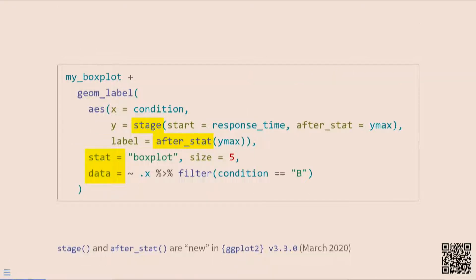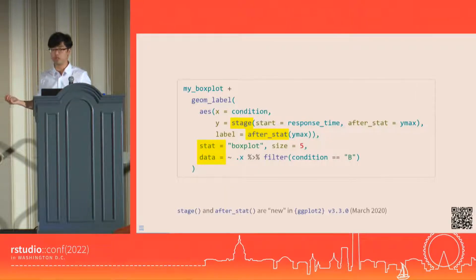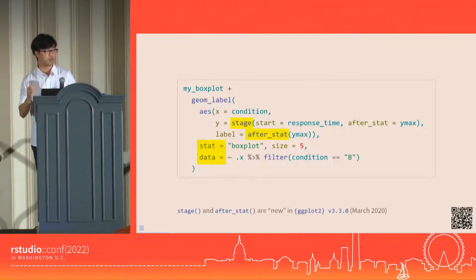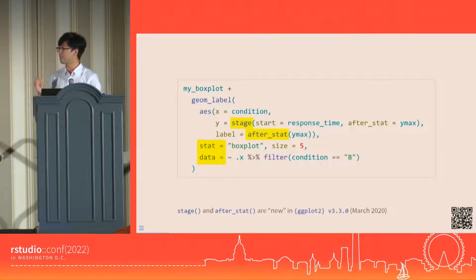We have strange functions called inside the aes, like stage and after_stat, and we're using the stat and data arguments of the geom label layer, which we don't often do. This is still vanilla ggplot, but this kind of code is very difficult to reason about because it requires a mental model of how ggplot internals work.